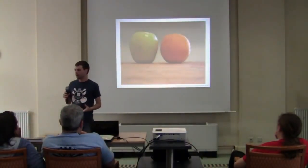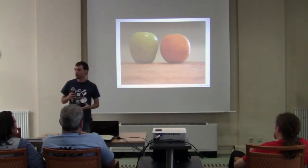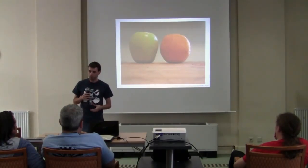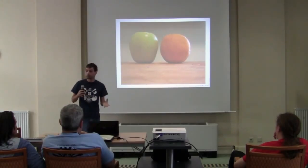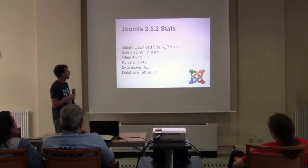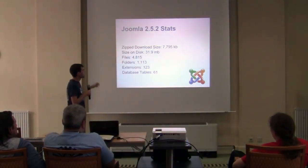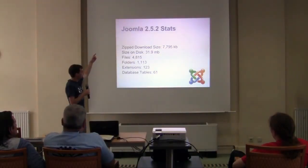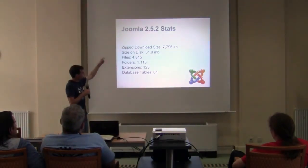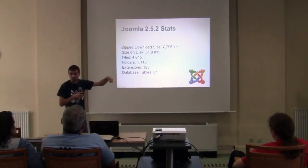Let's do a little comparing — are they really that different in the end? Some of the metrics show how different they are. Let's talk about some of the facts about file sizes and database tables. This is from 2.5.2 when I did the first comparison. We're talking almost 8 megabytes — when you unzip, it's 32. There are almost 5,000 files, over 1,000 folders, and 123 extensions — they've added two more since then.